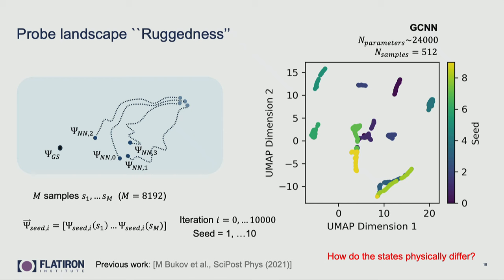There are many questions one can ask here — for instance, how do these states physically differ. Are these clusters separated by a different sign structure, making it hard to go from one to the other? It seems like it's not a smooth, trivial landscape with one global minimum. If you're truly overparameterized and overparameterization means your landscape is smoother, then this would mean you're not overparameterized yet. But we also don't know if overparameterization really means the landscape is smoother for NQS — maybe you cannot reach the overparameterized regime because this already has half the number of parameters of your Hilbert space size.